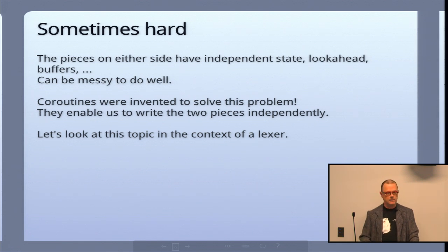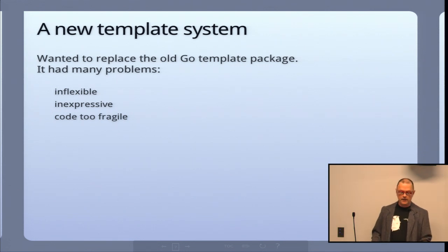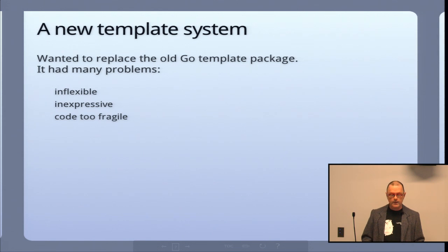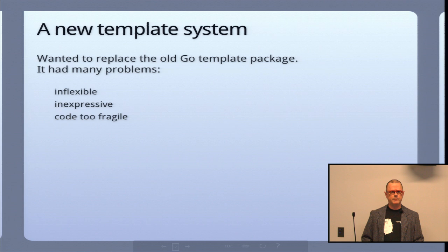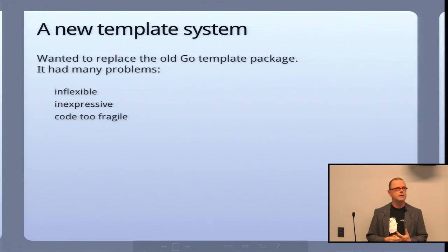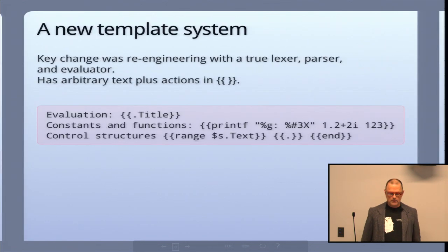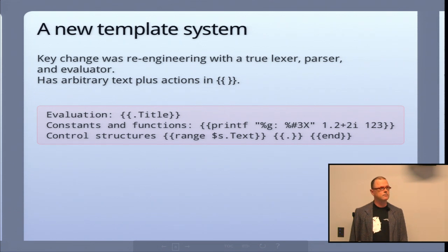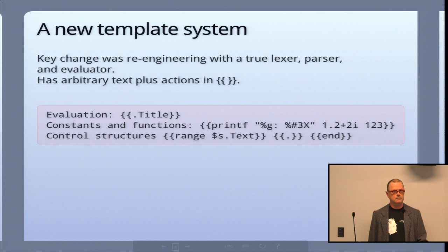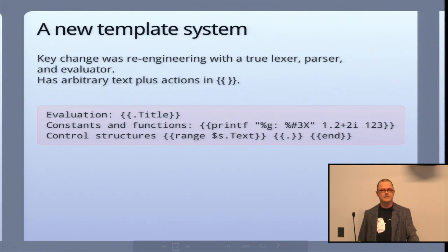I'd like to look at that approach in the context of a lexical scanner for a template system. I did a text template system — you can think of it as an HTML template system — very early in the development of Go libraries. To be honest, it wasn't very good. It was pretty inflexible and inexpressive. The code was very fragile, and as it developed we wanted to add things like numerical constants and quoted strings, but the whole code didn't accept it well. So earlier this year I decided to write a new one, building it as a proper lexed, parsed template that I could write clean, good code for. What I want to show you today is how the lexer works.